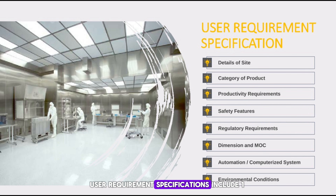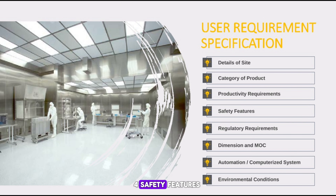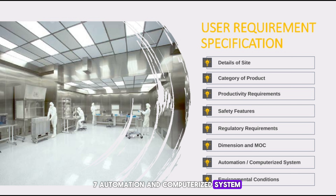User Requirement Specifications include: details of site, category of product, productivity requirements, safety features, regulatory requirements, dimension and MOC (Material of Construction), automation and computerized system, and environmental conditions.